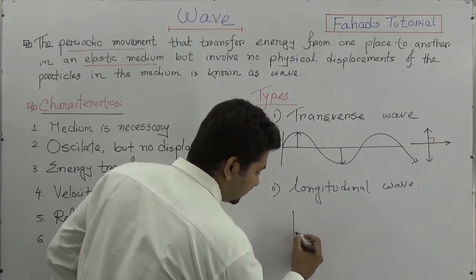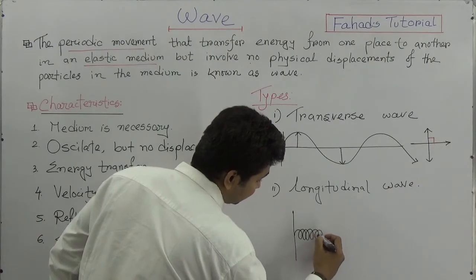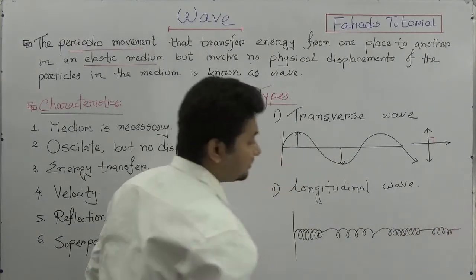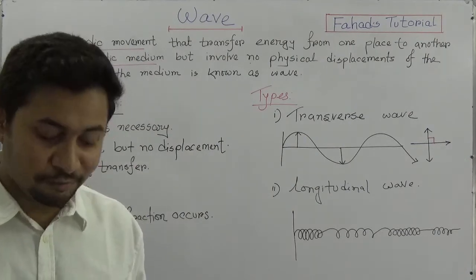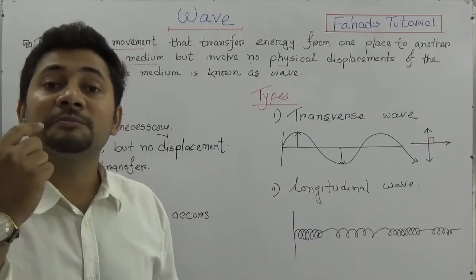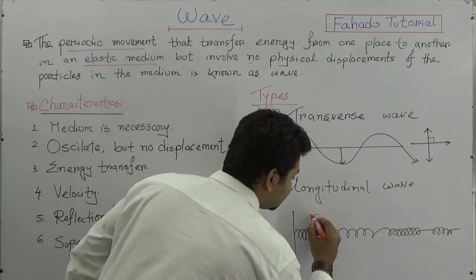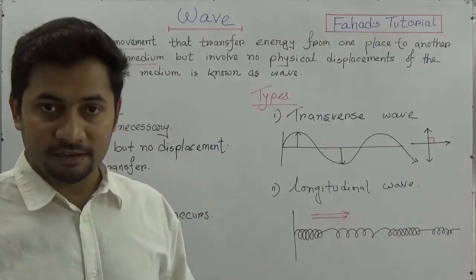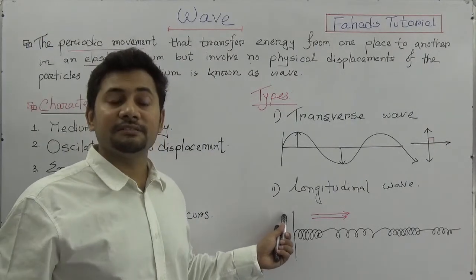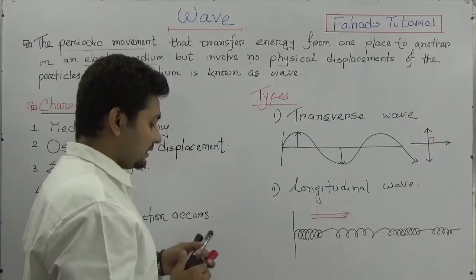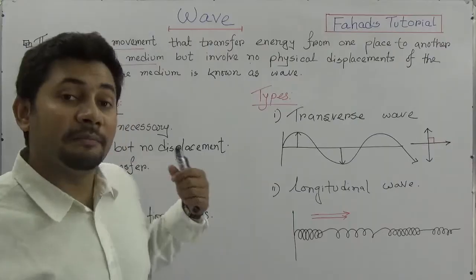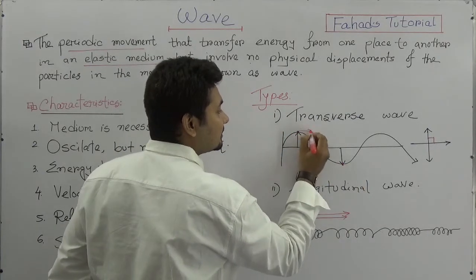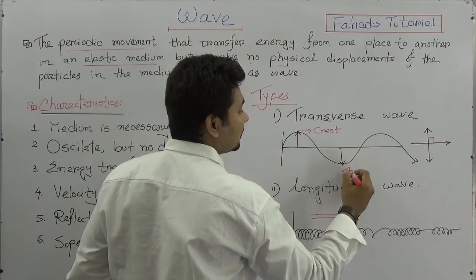In the case of a longitudinal wave, the direction of wave propagation and the oscillations of the particles are parallel. The particles move in the same direction as the wave is moving. That is the definition of longitudinal wave. In a transverse wave, when a particle is oscillating there is an upper position and a lower position — the upper is known as a crest and the lower is known as a trough.